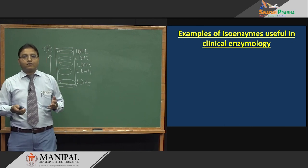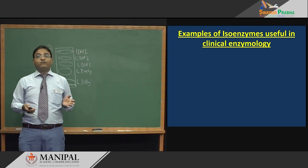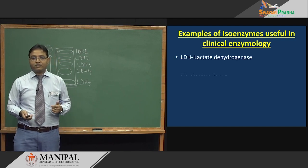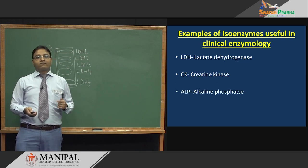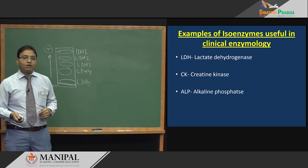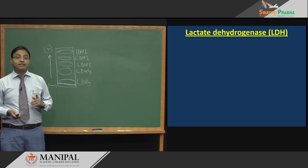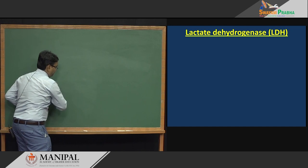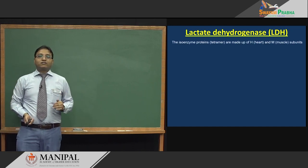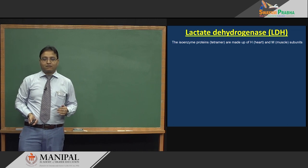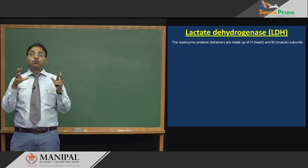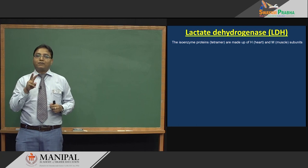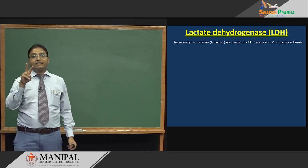Coming to clinical examples of isoenzymes — we will cover LDH (lactate dehydrogenase), CK (creatine kinase), and ALP (alkaline phosphatase). Lactate dehydrogenase is a tetramer, meaning it contains 4 polypeptide subunits made up of 2 different types: H (heart) and M (muscle).